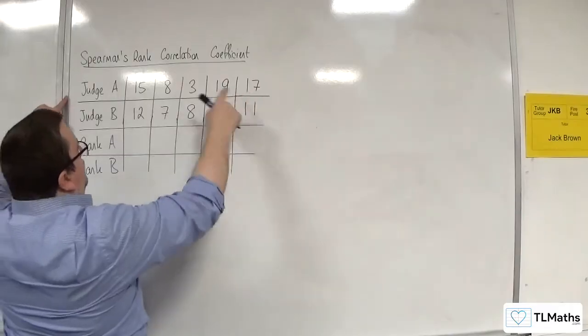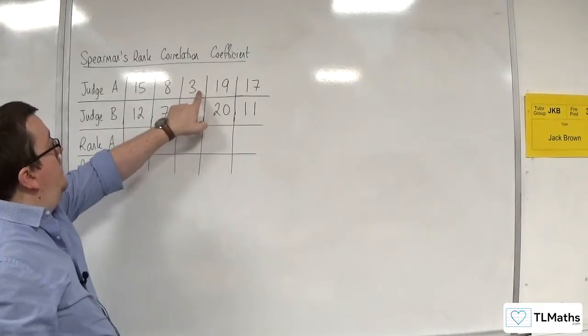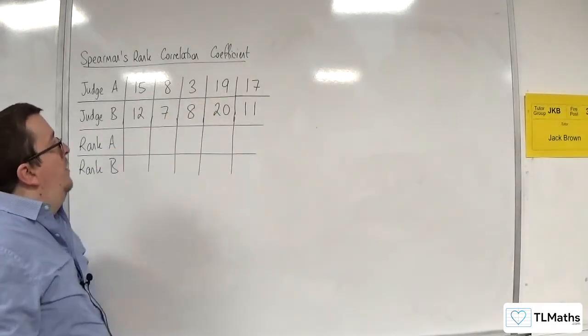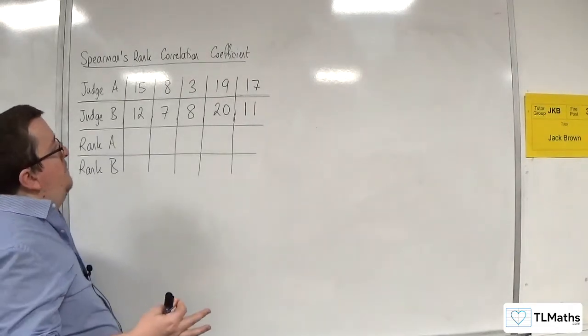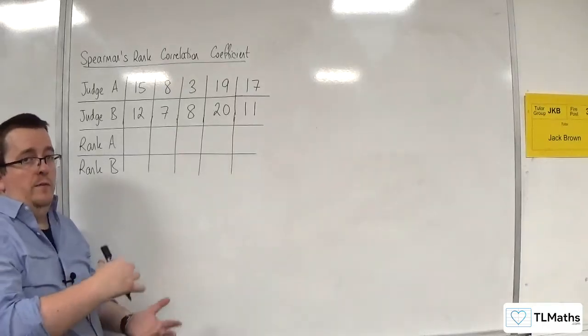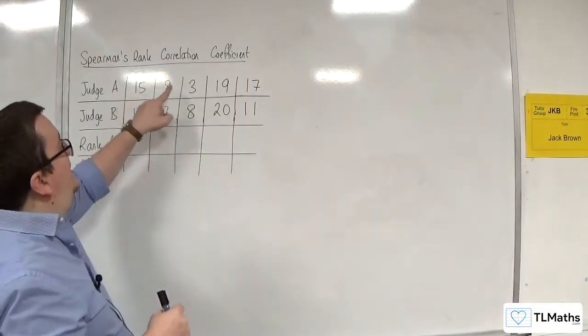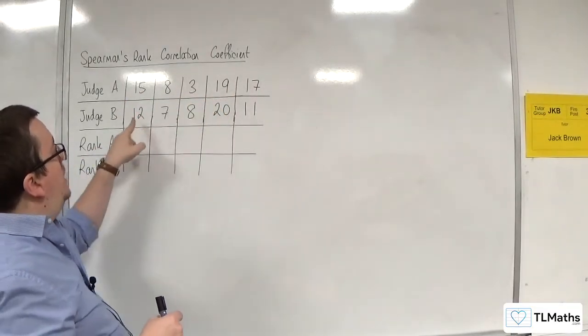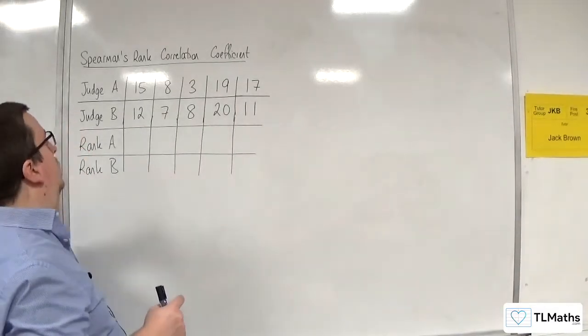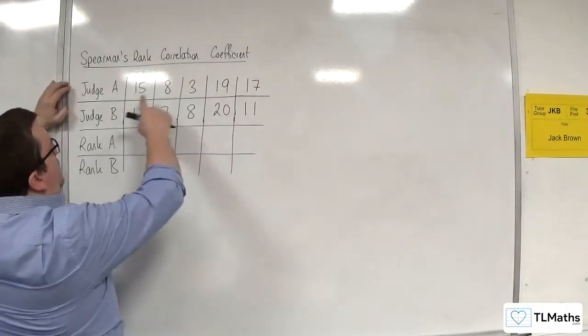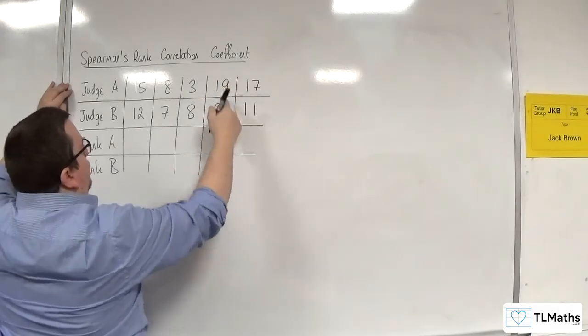So for Judge A, now you might be thinking, well, do I start with the 3, or do I start with the 19? Well, it doesn't matter which one you're going to rank as number one, as long as you do the same methodology for Judge B. So if you want to go in descending order for Judge A, you've got to go in descending order for Judge B. You can't mix and match. So you might think, it makes sense to go with 19 as first, because that's the highest score, so they've ranked that one first. That's first then.